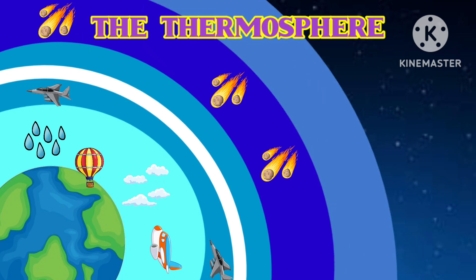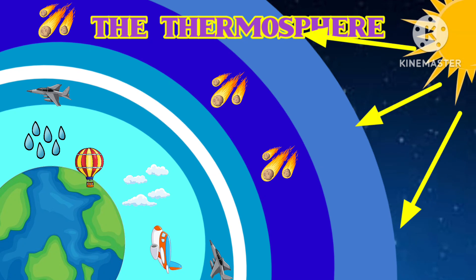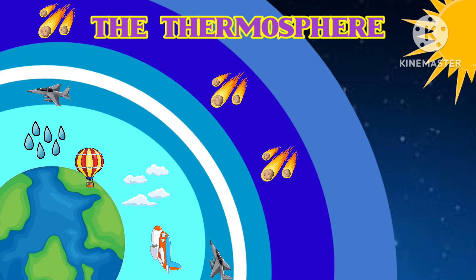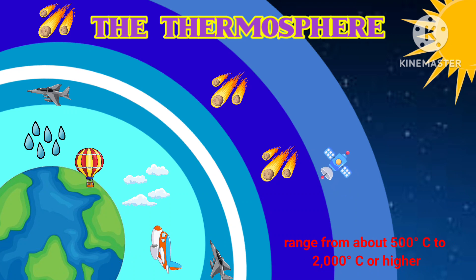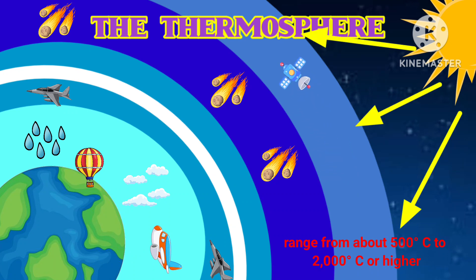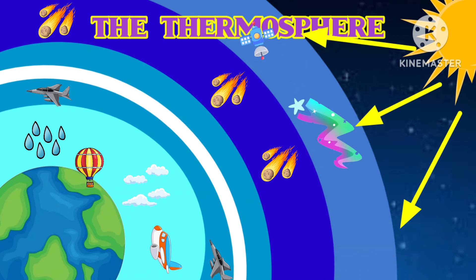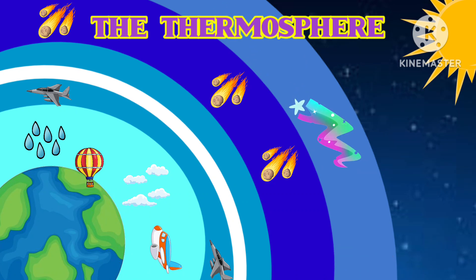The thermosphere lies above the mesosphere, and this is a region where the temperature increases as you go higher up. The temperature increase is caused due to the absorption of energetic ultraviolet and X-ray radiation from the sun. Satellites orbit Earth within the thermosphere. Temperatures in the upper thermosphere can range from about 500 degrees Celsius to 2000 degrees Celsius or higher. The aurora — the northern lights and southern lights — occur in the thermosphere.